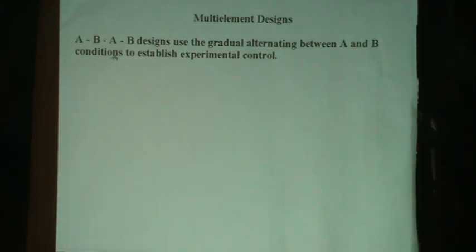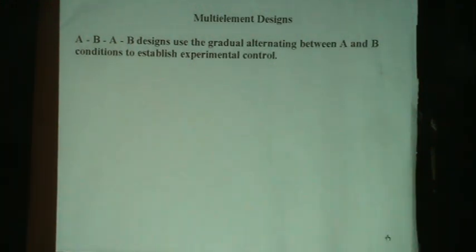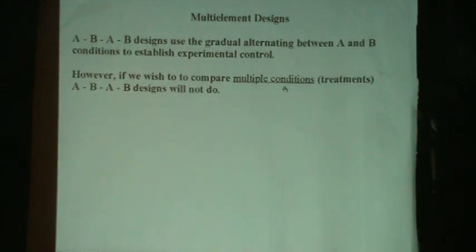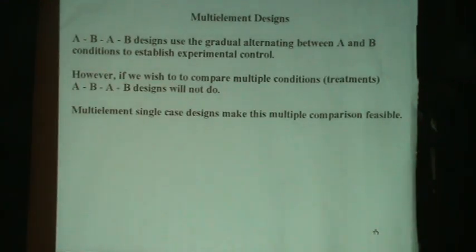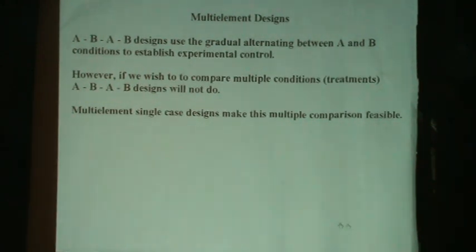Typically, the A-B-A-B designs use gradual alternating between the A, or baseline condition, and B, the intervention condition. That's how they establish experimental control — presenting a baseline, then an intervention, then withdrawing the intervention, going back to baseline, and then the intervention again. However, if we want to compare multiple conditions or multiple treatments, an A-B-A-B design will not work well, but a multi-element design can make these multiple comparisons feasible.